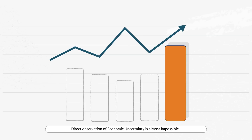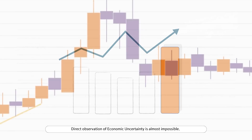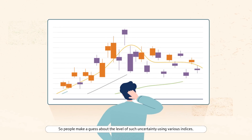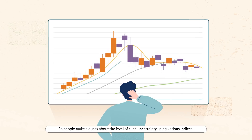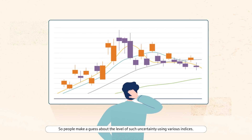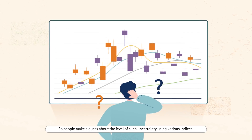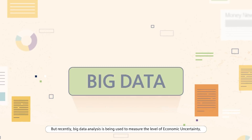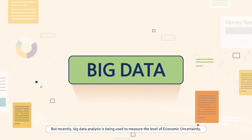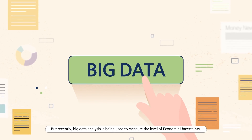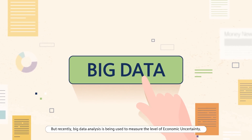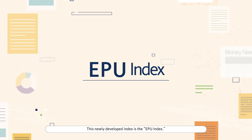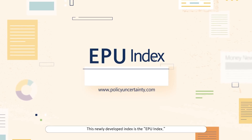Direct observation of economic uncertainty is almost impossible, so people make a guess about the level of such uncertainty using various indices. But recently, big data analysis is being used to measure the level of economic uncertainty. This newly developed index is the EPU Index.